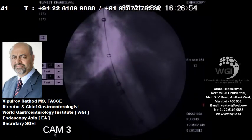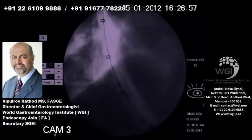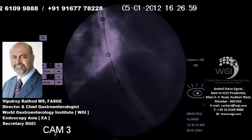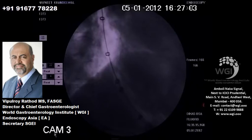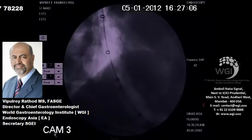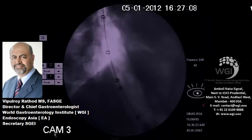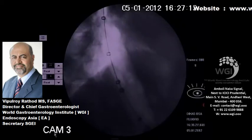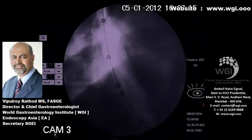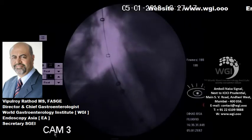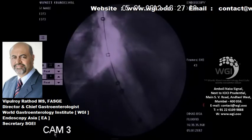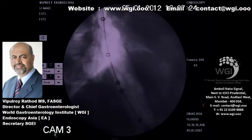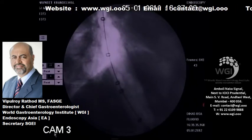We will deflate again — you can see how the balloon deflates. Just to demonstrate how easily it has opened up, I will inflate the balloon one more time: 1, 2, and 3 — it just straightens up easily without any resistance. This tells us there is adequate dilatation of the LES with the 30 mm balloon. Whenever dilating a patient who has already undergone a previous dilatation, it is very important to start with a 30 mm balloon.